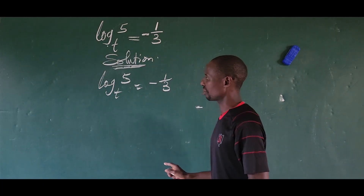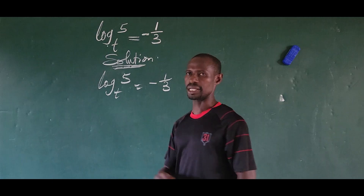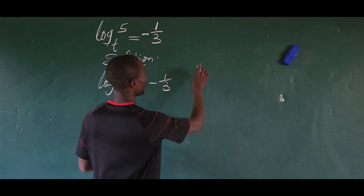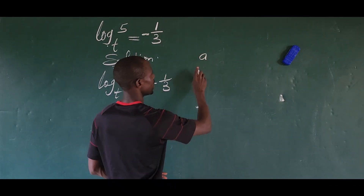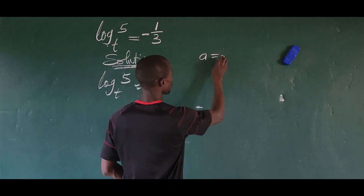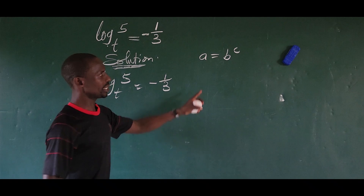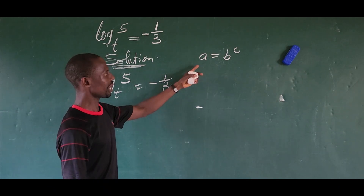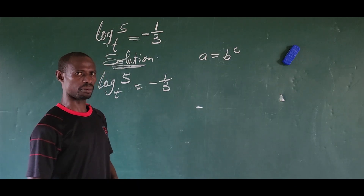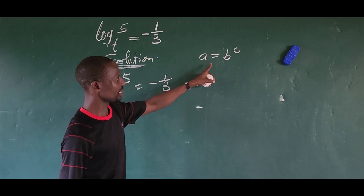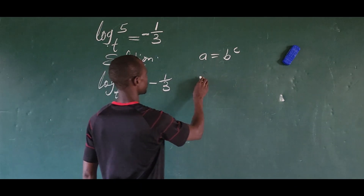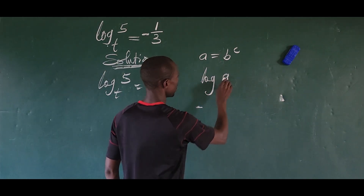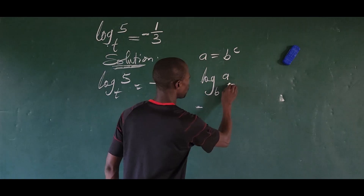As I said earlier, there is a strong relationship between logarithmic and indices. It says that if you have a equal to b to the power of c, this is the index form of the expression. We can rewrite this expression in logarithmic form, which gives us: log a base b equal to c.